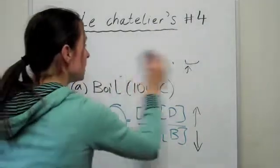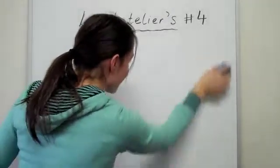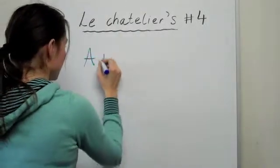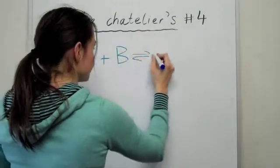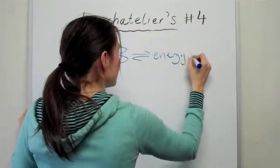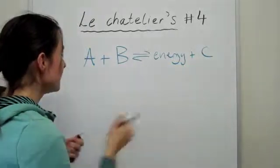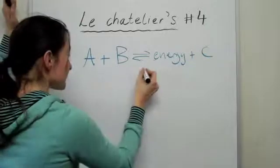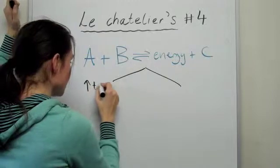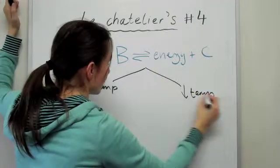So let us have a look at another case. Let us have a look at an exothermic reaction, in the sense that A plus B gives us energy, so energy is being released, plus C. Let's just change the formula around a little bit. I'm just going to have one reactant at the end, plus C. So let's have a look at this case. Let's compare the two. Let's see what happens when you increase the temperature and when you decrease the temperature.